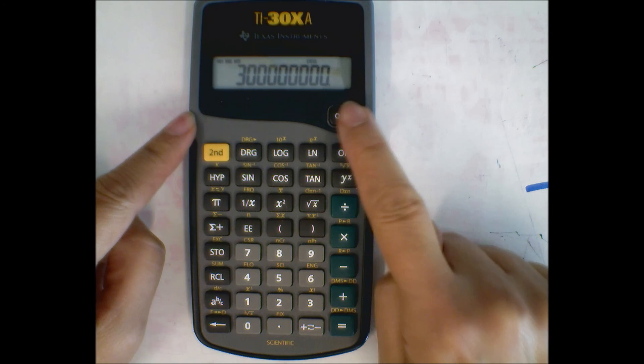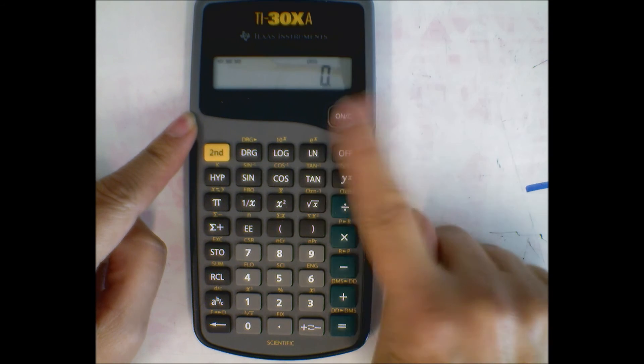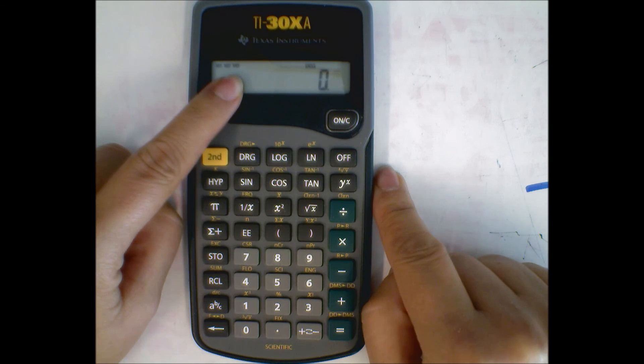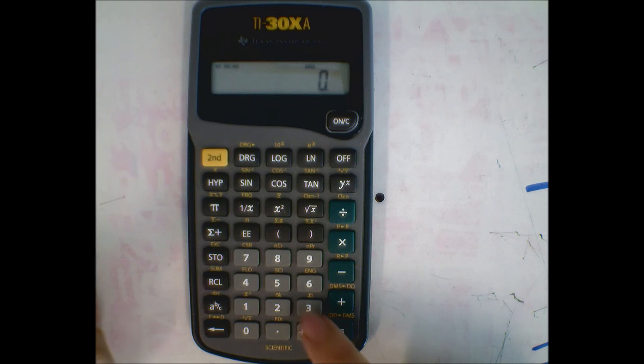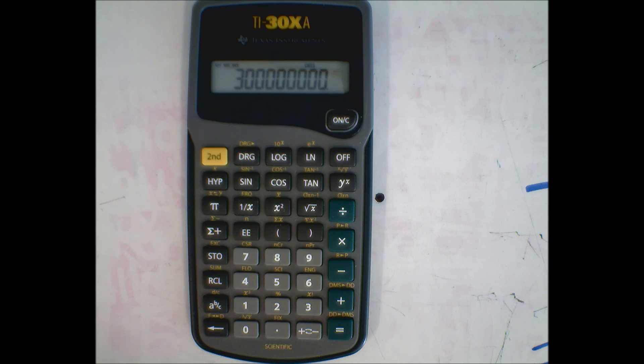That tells me that that number—I could turn this off, turn it back on, you still see that I have an M3. So if I want to get that number back, I hit recall 3, and there's my 3 times 10 to the 8th.